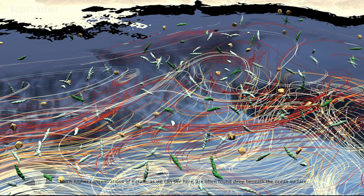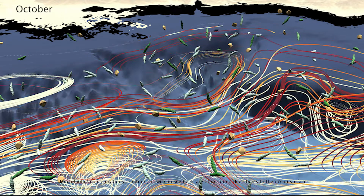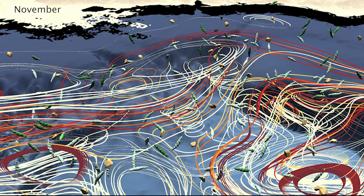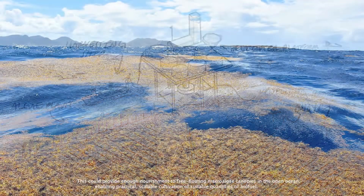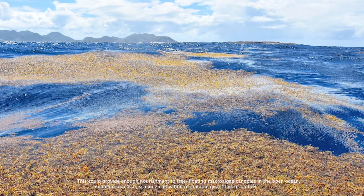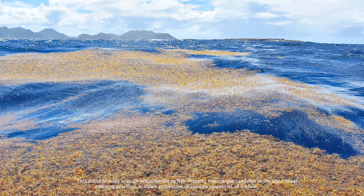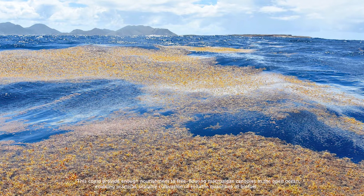Much higher concentrations of nitrates, as we can see here, are often found deep beneath the ocean surface. Scientists are considering geoengineering equipment to bring these nutrients to the surface. This could provide enough nourishment to free-floating macroalgae canopies in the open ocean, enabling practical, scalable cultivation of suitable quantities of biofuel.